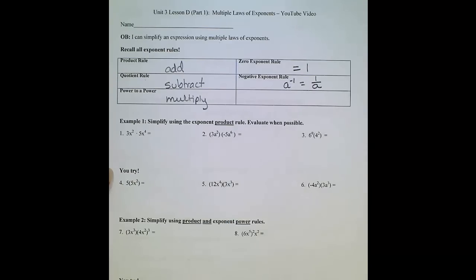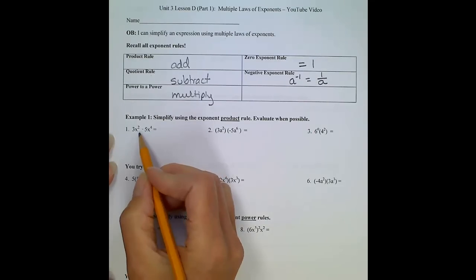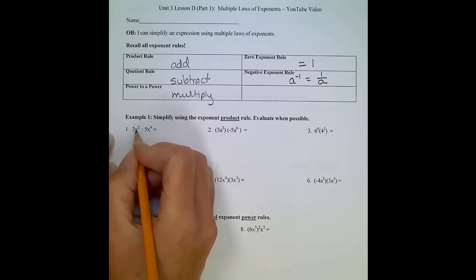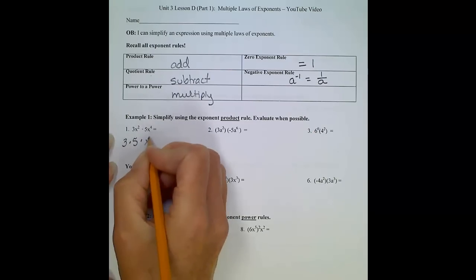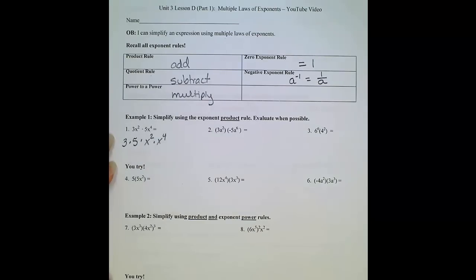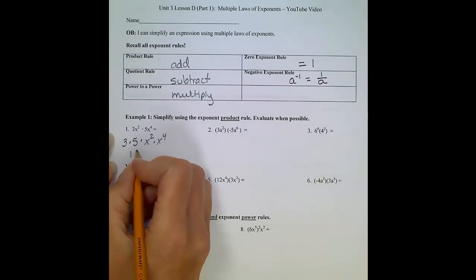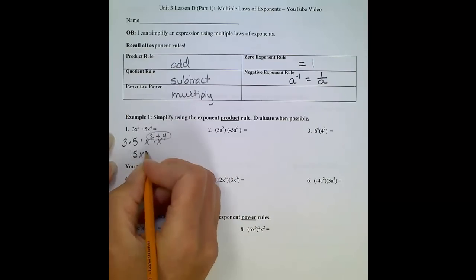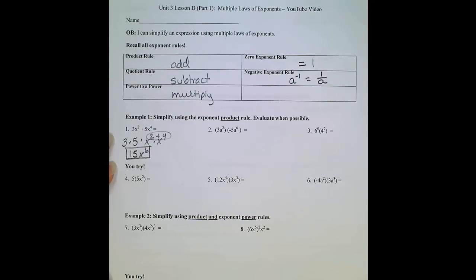Looking at example 1, number 1, I have a product, and what I do is regroup my terms, so I put like terms together. So I'm going to rewrite 3x squared times 5x to the 4th as 3 times 5 times x squared times x to the 4th. I'm just rewriting it so it's easier to understand. 3 times 5 gives us 15. I'm multiplying these two x's together, so I add those exponents, and I'll get 2 plus 4, which will give me 6.